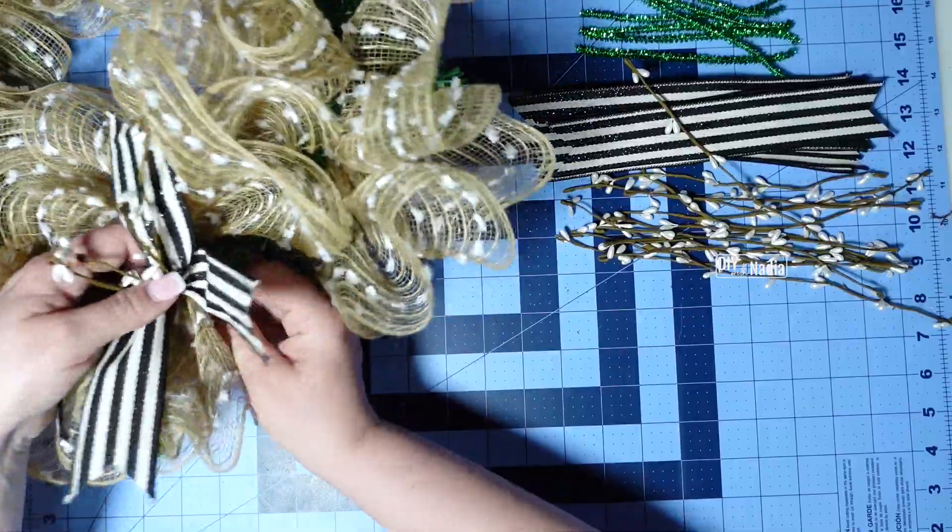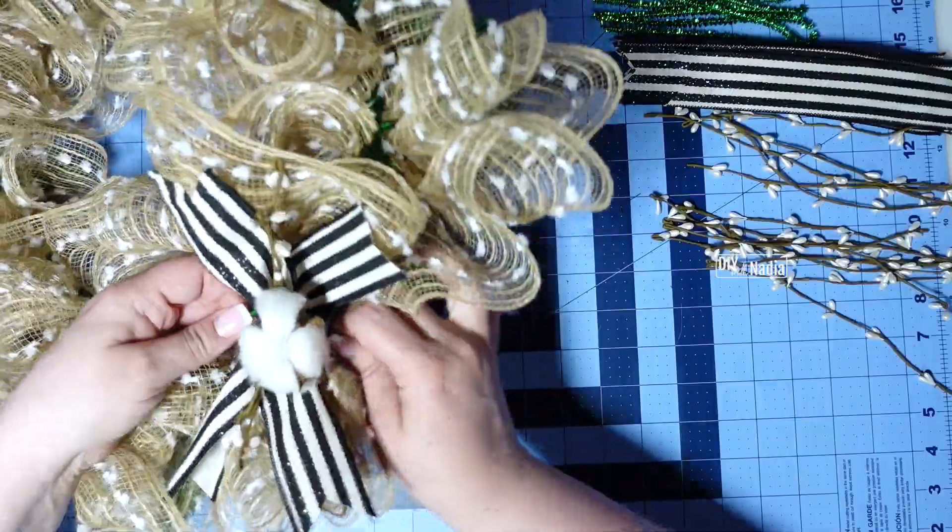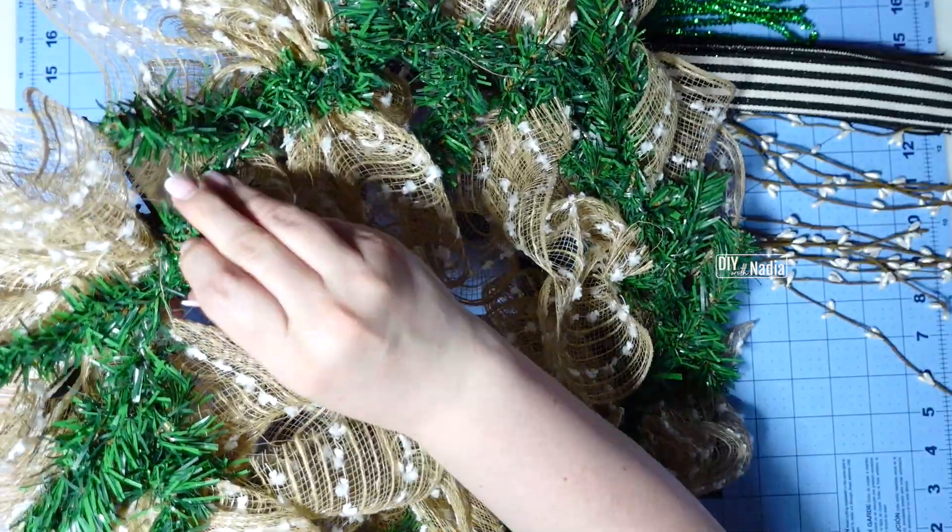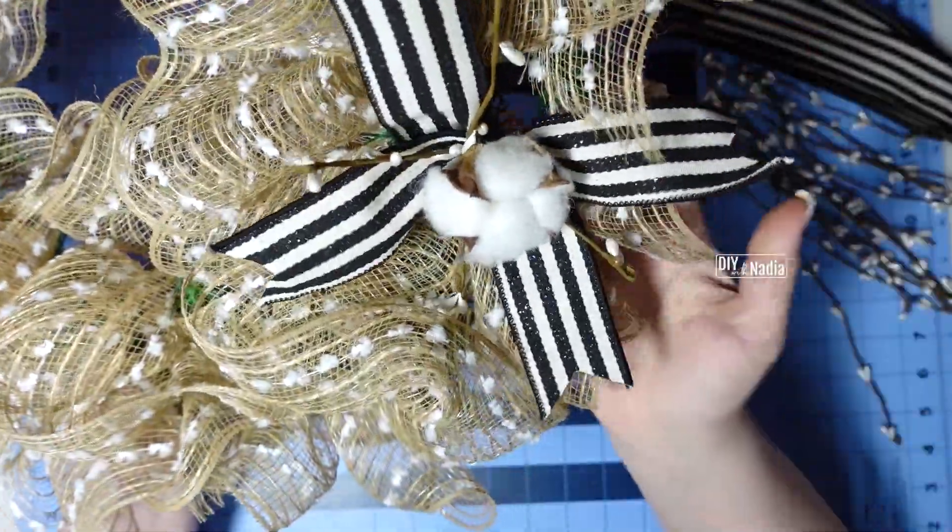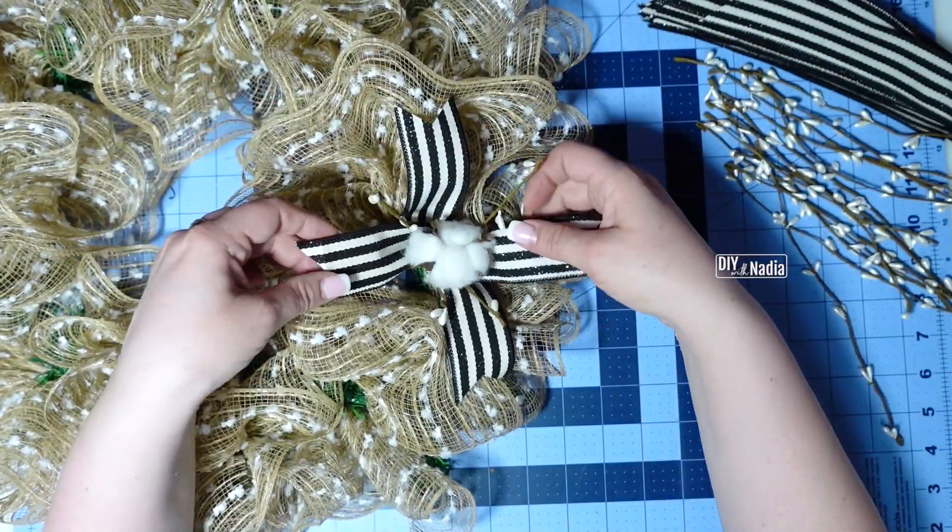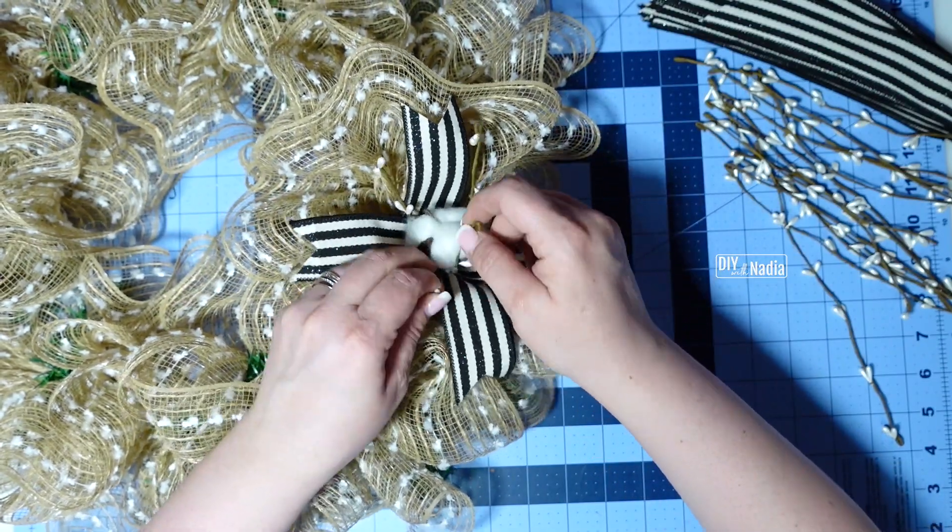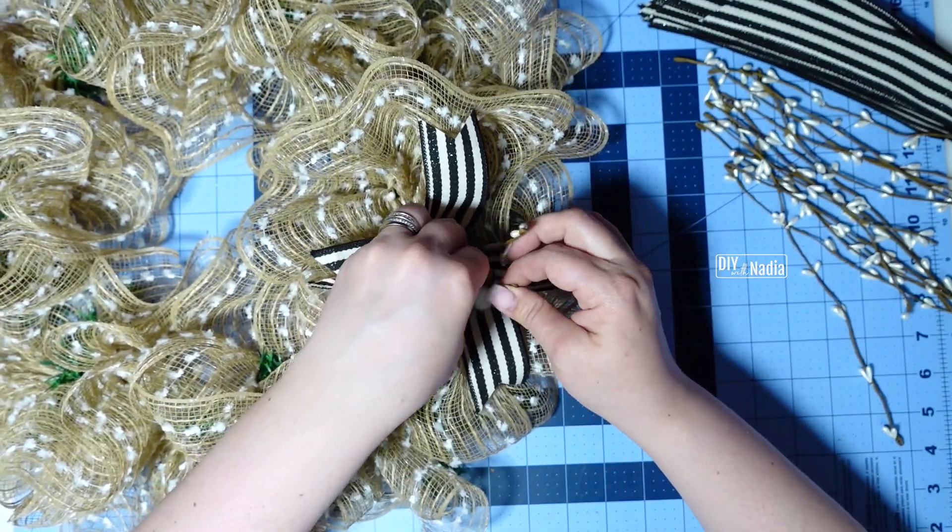And then we're going to wrap it around our first bundle here. Twist in place. Then we're going to grab our cotton pod, put that in the center and then twist that in place and I have my first little bundle. The ribbon we're just going to curl out just like that but the berries we're going to kind of push them up towards the center.